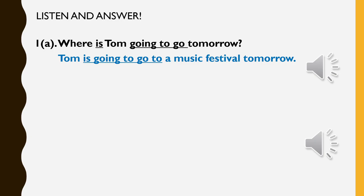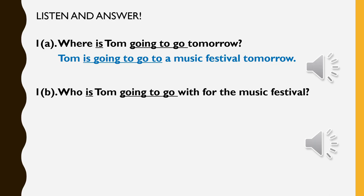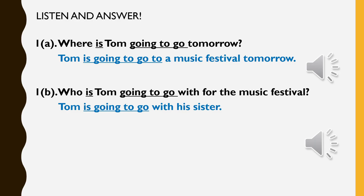Jadi kita tengok lagi soalan seterusnya. Masih lagi soalan yang sama daripada audio pertama, cuma ini adalah sub soalan yang kedua. Who is Tom going to go with for the music festival? Tadi dalam rakaman, siapakah yang Tom mau pergi ke music festival itu dengan? Jadi struktur di sini, who is Tom going to go? Bila jawab, jawab dengan ayat lengkap: Tom is going to go with his sister.